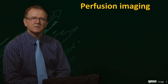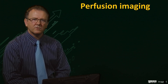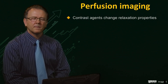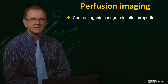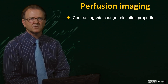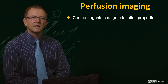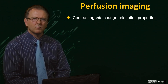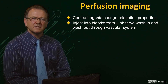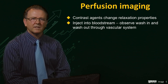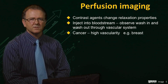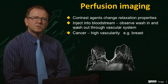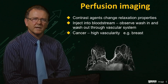As well as random diffusion, we can also measure the flow of spins or the perfusion of agents introduced into the body which have an effect on the MR signal. Special contrast agents that change the relaxation properties of water spins, and therefore change the image intensity in the vicinity of the agents, can be introduced by injection into the bloodstream. MRI can observe the wash-in and wash-out of the bolus of contrast agent delivered. These contrast agents allow detection of tissue that is highly vascular with enhanced blood flow, such as in tumours, making perfusion imaging an important diagnostic method for breast cancer, for example.